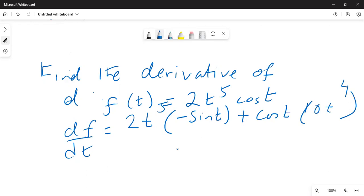This equals minus 2t to the power of 5 sine t plus 10t to the power of 4 cosine t. This is the final answer.